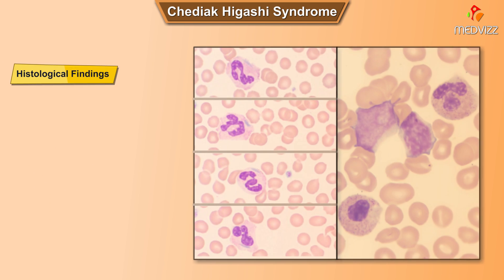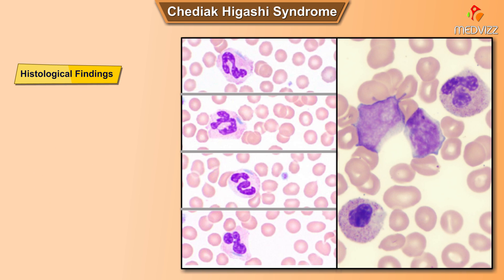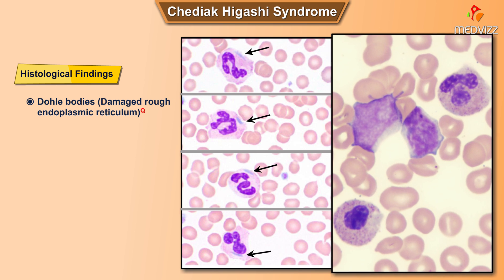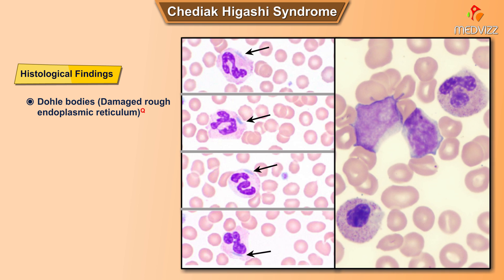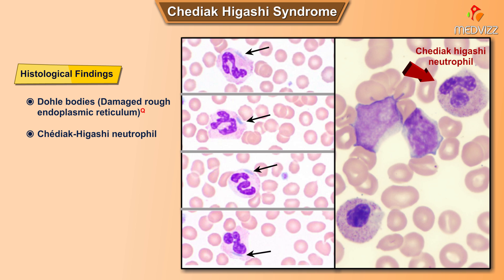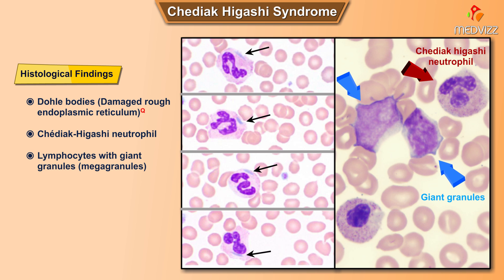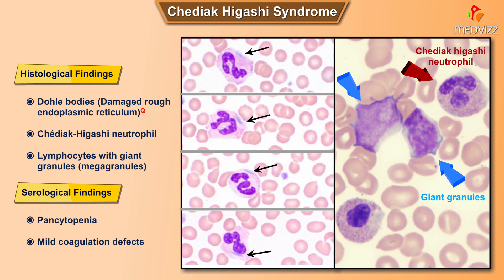Findings. Peripheral smear findings include Döhle bodies and damaged rough endoplasmic reticulum. This peripheral smear slide demonstrates a Chediak-Higashi neutrophil with the arrow pointing towards it, and lymphocytes with giant granules known as megagranules. Serological findings include pancytopenia and mild coagulation defects.